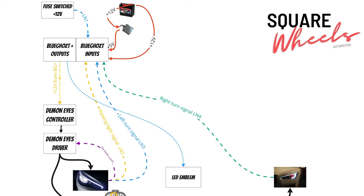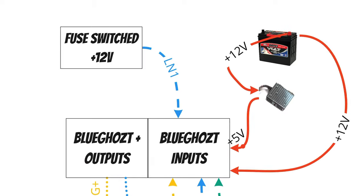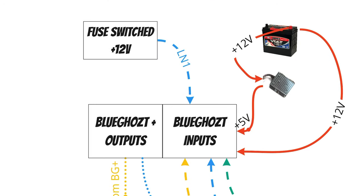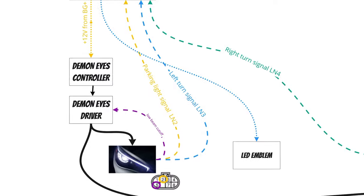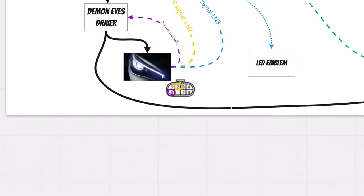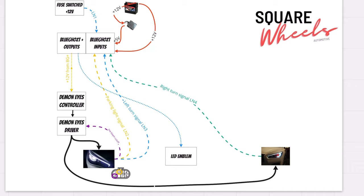I want this to be as easy as possible for you, so I've put together a wiring diagram that details everything — from where you're getting power, where you're getting signals or triggers to your Blue Ghost Plus controller, where you're wiring the outputs, your demon eye wiring — basically everything you need for this entire project if you want to do it exactly the same way I did, with welcome animations and daytime running lights. This is your holy grail. If you get hung up, come back to the video or zoom in on the diagram — the answer is probably right there.